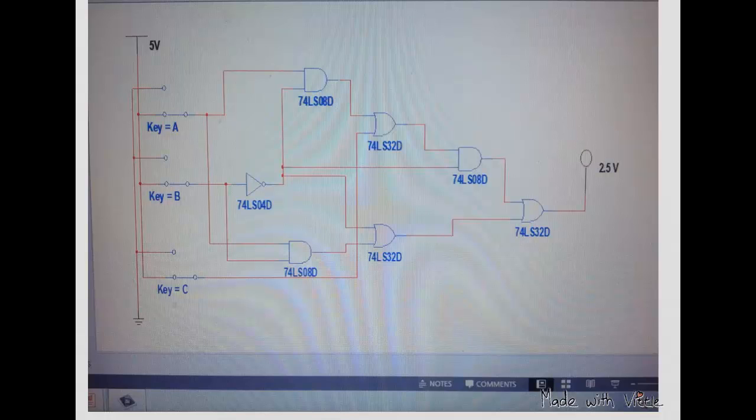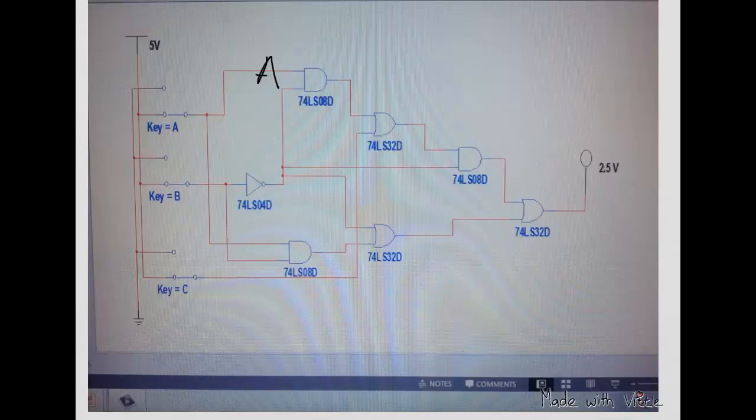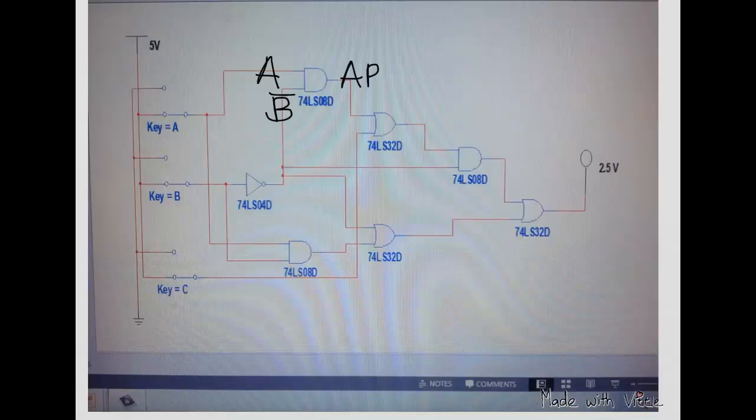So let's first do Boolean algebra here on this, but we're going to start from the circuit. So here we have A, not B, so we have A and not B.